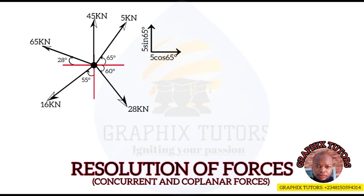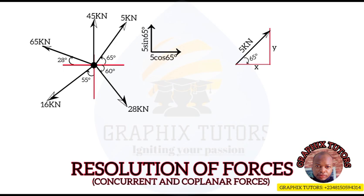I will use this first example to show why we use 5 sin and 5 cos. We join the 5 kilonewton force to the horizontal, giving us x and y axes. So: this is the x-axis, this is the y-axis, the angle is 65 degrees, and the force 5 kilonewton is the hypotenuse.